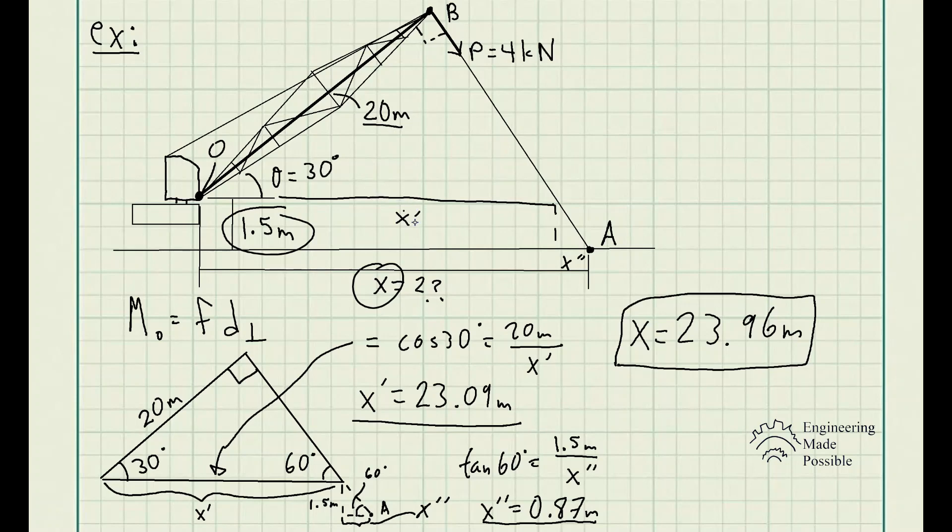And so, yeah, this is the second problem here. The second part to this is what is that moment? So since we already have that, the P equals 4 kilonewtons, the perpendicular distance is 20 meters.